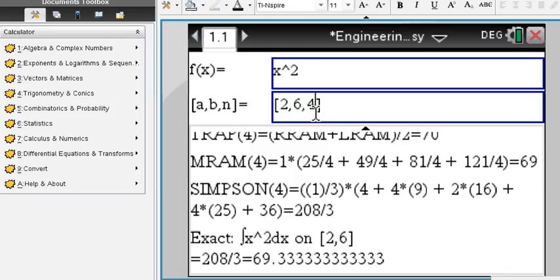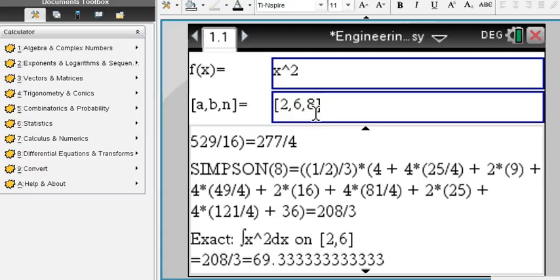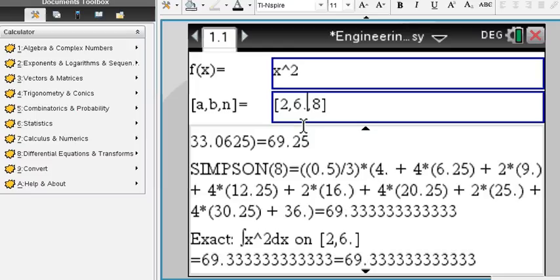Change the number of subintervals, say you make it 8, and your approximations are all going to be better. Okay, again, you put decimal to get decimal answers. Decimal input implies decimal output.